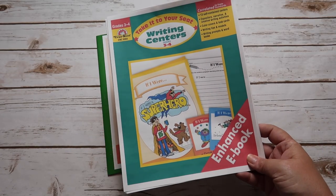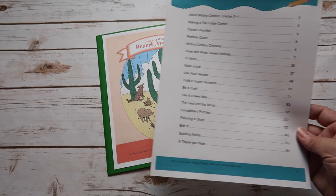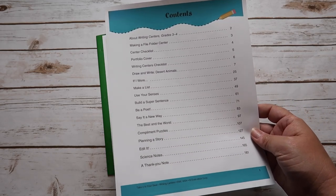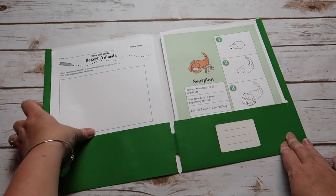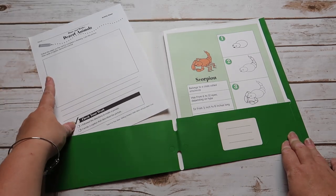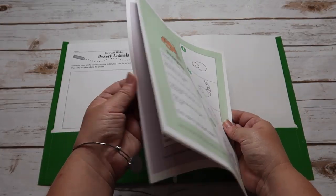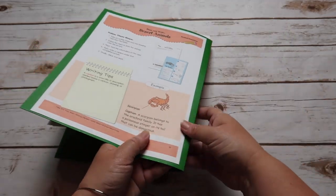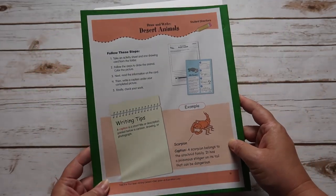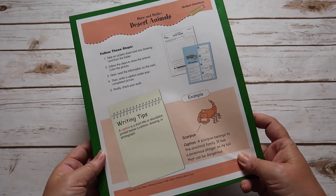The next one we have is draw and write desert animals. This is part of the writing centers. The one we're looking at today is grades three and four. Here is a look at its contents. I'm really excited about this one because Emily loves to draw. So you have your recording sheet, which is drawing the animal and then writing about it. And you have all of these different animals to choose from. And then some of them on the back have the instructions for the child. So you would put this on the back and that way they could do it without you.